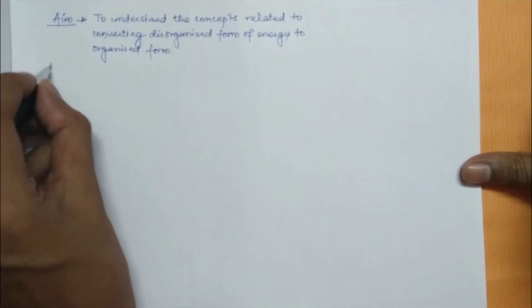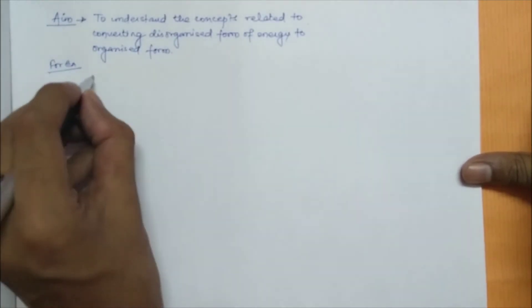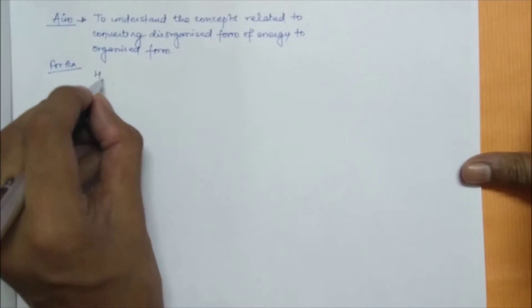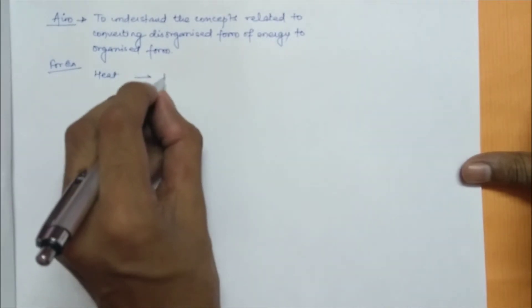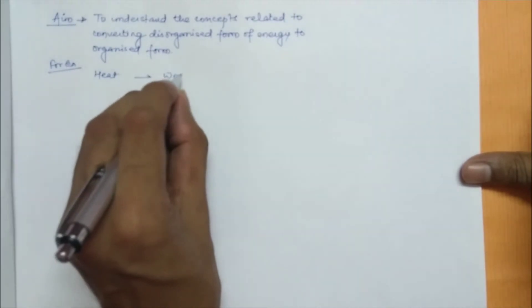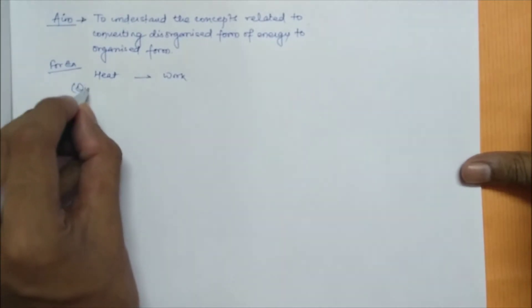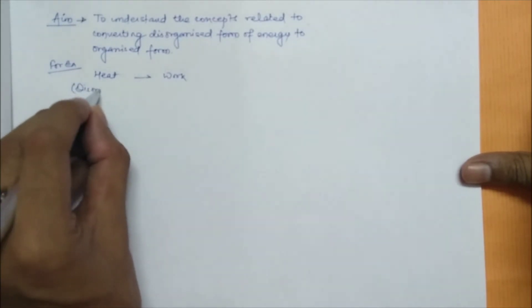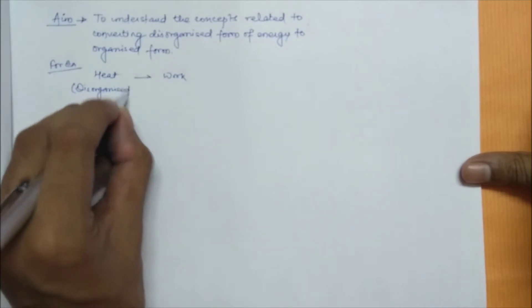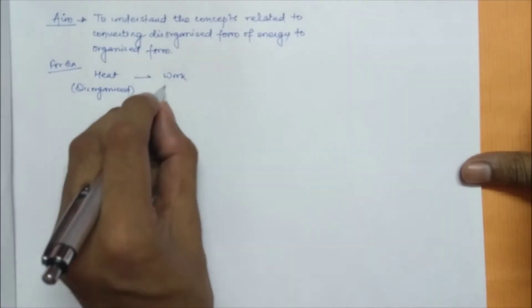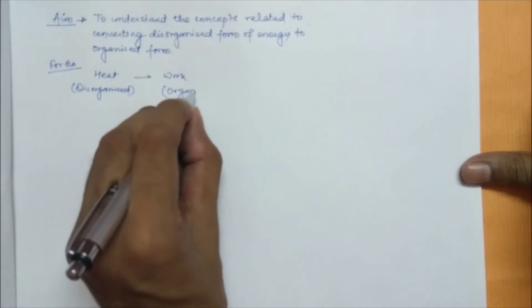For example, heat to work — where heat is the disorganized form and work is the organized form of energy.